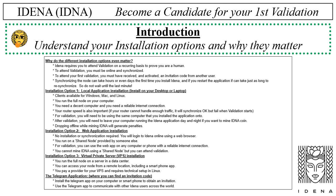Installation option 3: virtual private server (VPS) installation. You run the full node on a server in a data center. You can access your node from a remote location, including a smartphone app. You pay a provider for your VPS and it requires technical setup in Linux. The Telegram application is where you can find an invitation code. Install the Telegram app on your computer or smartphone to obtain an invitation. Use the Telegram app to communicate with other IDENA users across the world.